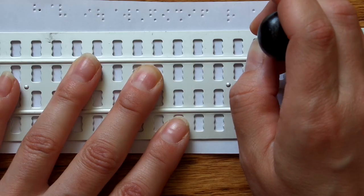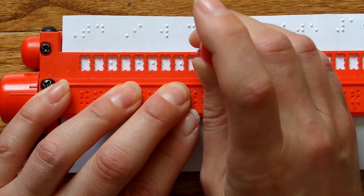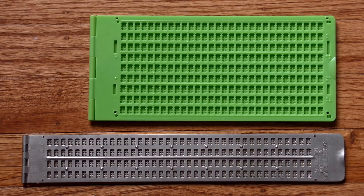Today I will demonstrate 10 different braille writing slates. A slate is a template for writing braille by hand. It's equivalent to using pen and paper.